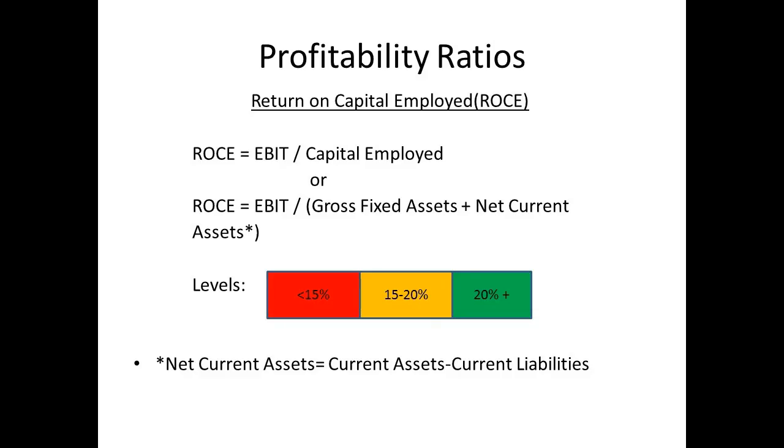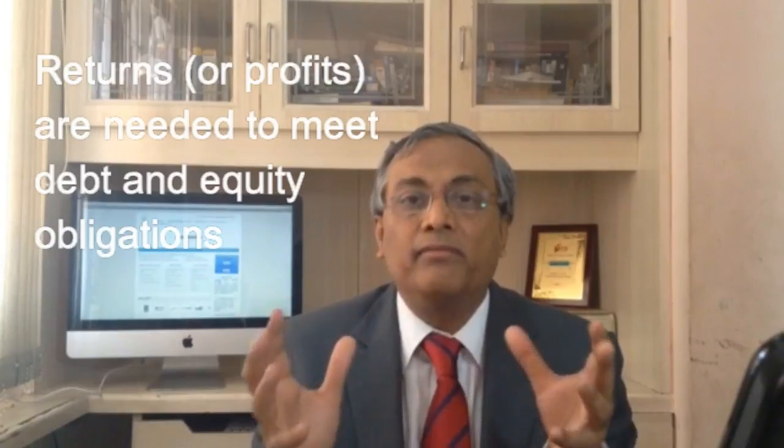Once you compute this ratio you will get a number. There are no standard answers about what is good or bad, but there are some guidelines. A company with a ROCE ratio greater than 20% is very good; 15 to 20% is okay; and less than 15% is troublesome. Profits are meant to provide returns to the people who own them — those who have given you debt need to be repaid, and the owners of the company need to get dividends. Returns are necessary to meet these obligations.